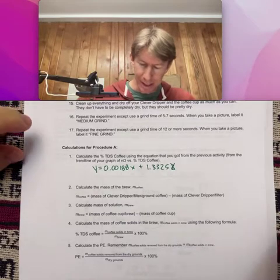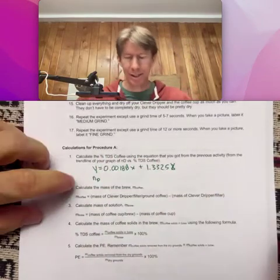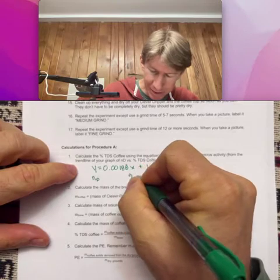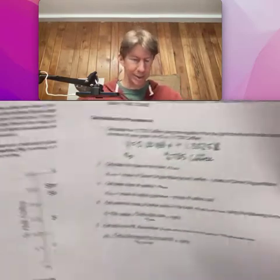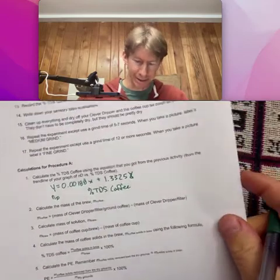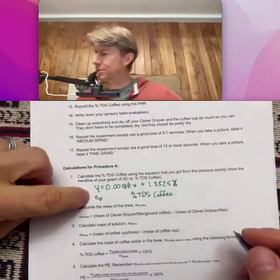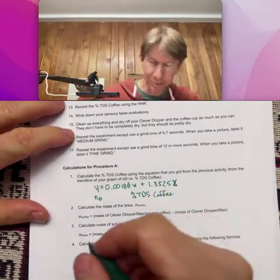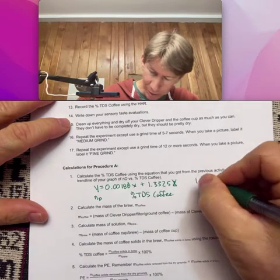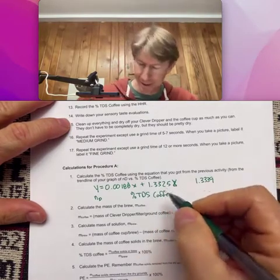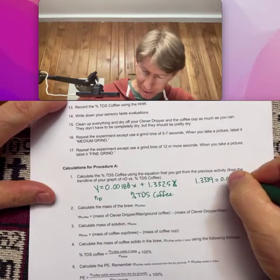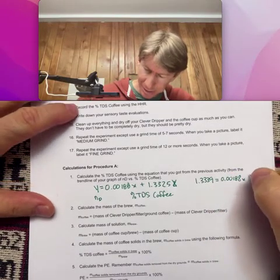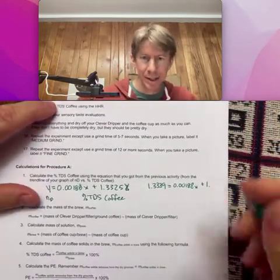So for my example, I got Y equals 0.00188X plus 1.33252. And I'm just going to take that last two off because of something scientific called significant figures that we don't really talk about in this class. But now, if you'll remember, so my refractive index was my Y value and my X value was percent TDS coffee.